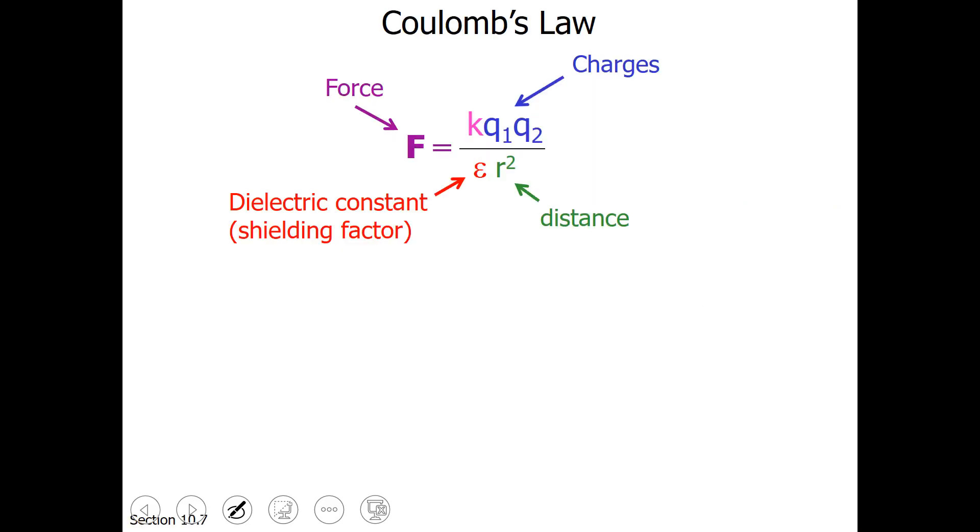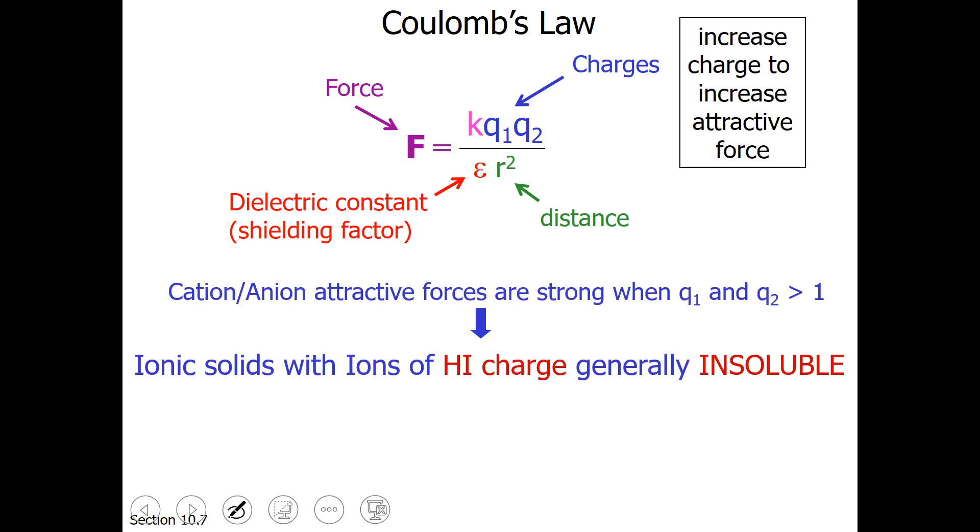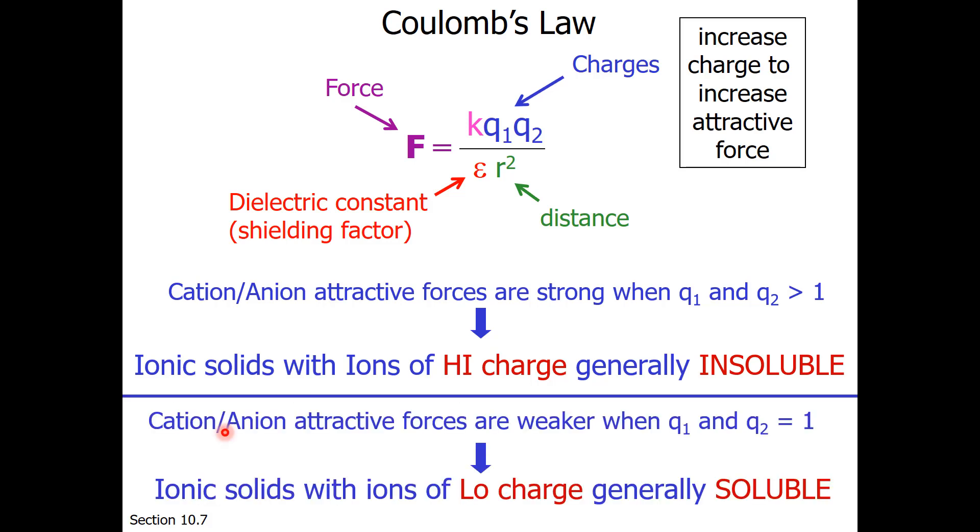Now is a good time to remind students of Coulomb's Law, which says the force between charges is equal to Coulomb's constant times the multiple of the charges over the dielectric constant and the distance squared. If you want to increase attractive forces, charges must also be increased. So cation and anion attractive forces are strong when Q1 and Q2 are greater than 1. Ionic solids with ions of high charge are generally insoluble. Cation and anion attractive forces are weaker when Q1 and Q2 are equal to 1, so that means ionic solids with ions of low charge are generally soluble. This is a general explanation of our solubility rules.